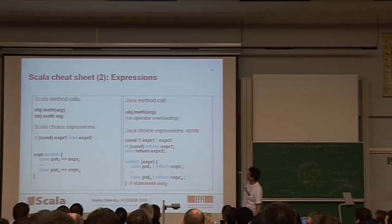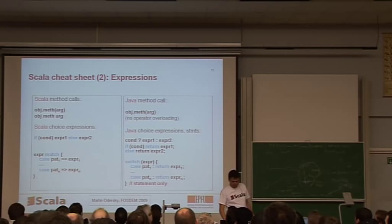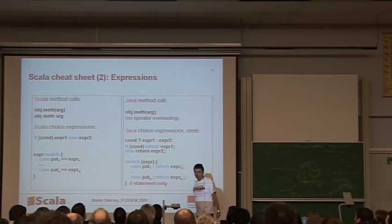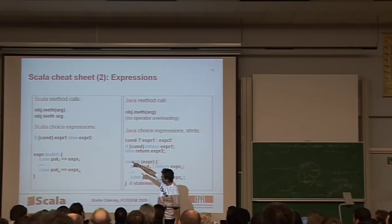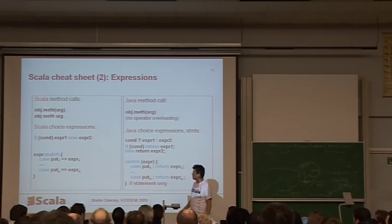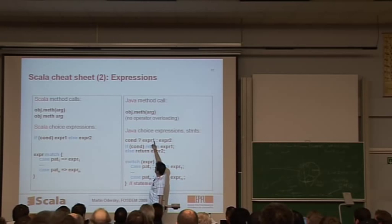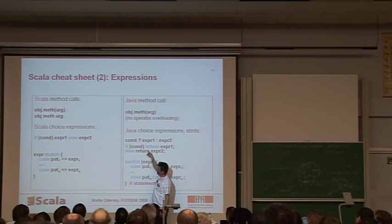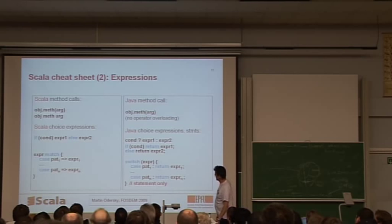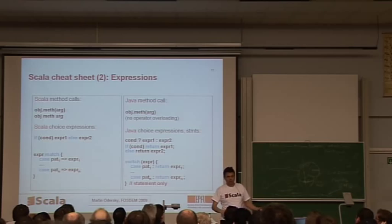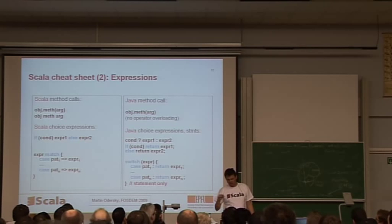So if you go through the cheat sheet further on, with the expressions, so a method call looks basically in exactly the same way as in Java. So you write object.method of some arguments. There's a shorthand in Scala which lets you drop the dot and the parentheses. You can just write object method argument, and that means the same thing. It's also a method call, but the method is used there as an infix operator. The conditional expressions, there's the if, then, else, very much like in Java, but because in Scala every statement is an expression, we only need one if. So in Java you need two ifs, one for expression and one for statements. In Scala you use the same if for both expressions and statements. Instead of the switch, you have a match here, but in fact the capabilities of the match are more powerful than the switch because it lets you do general pattern matching, not just test on some simple constants.